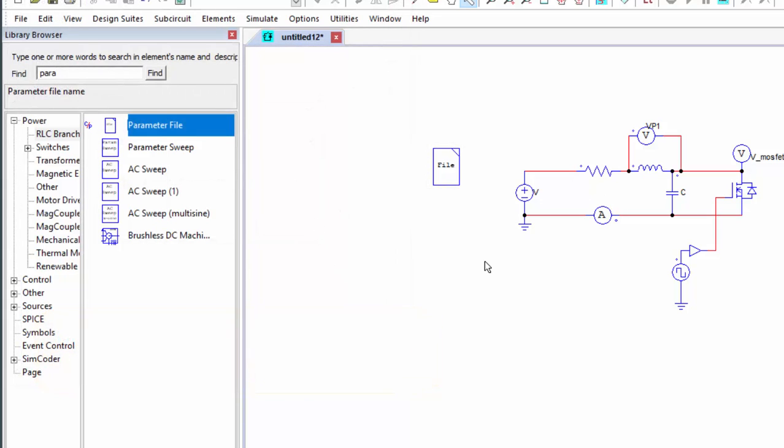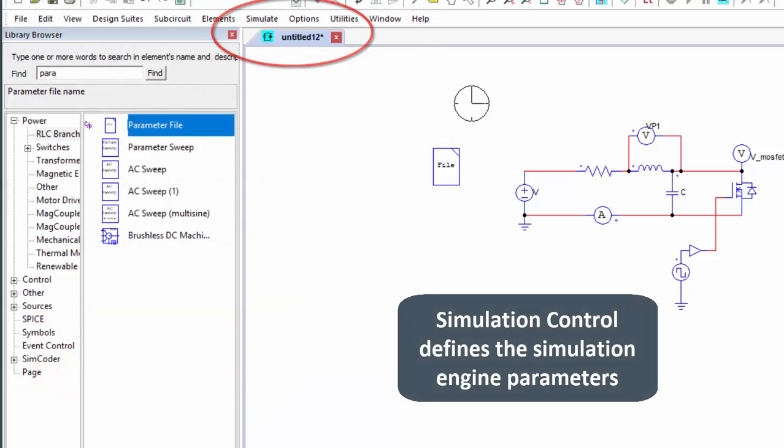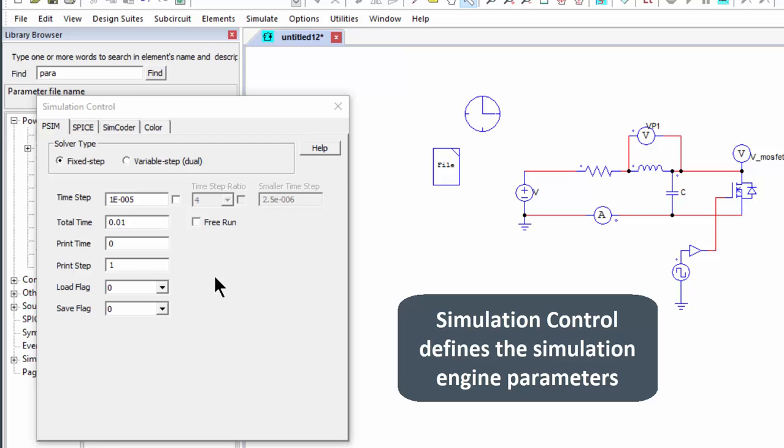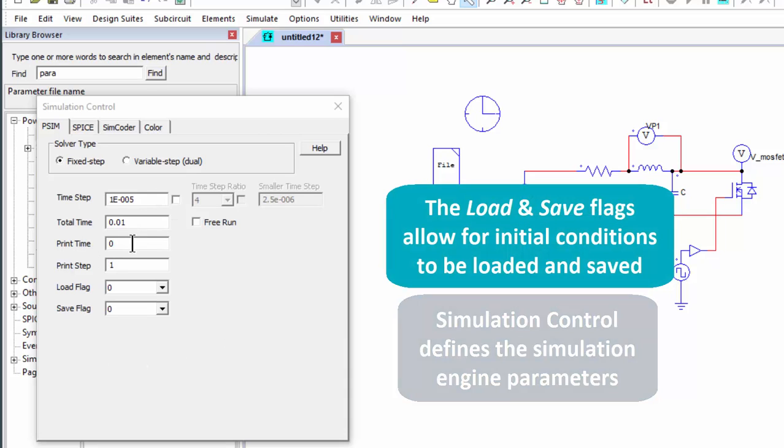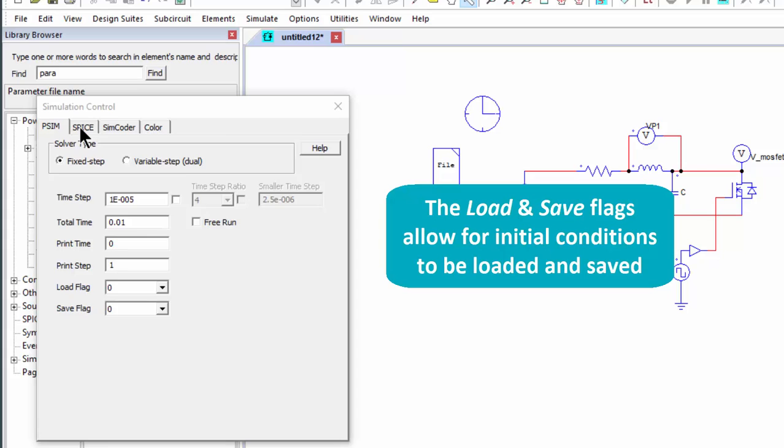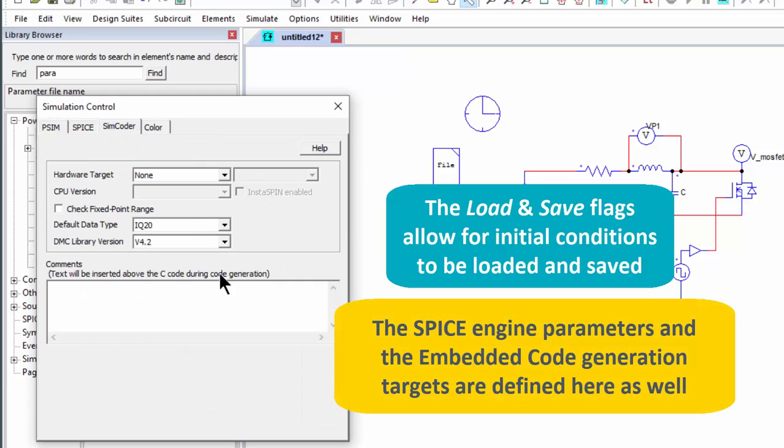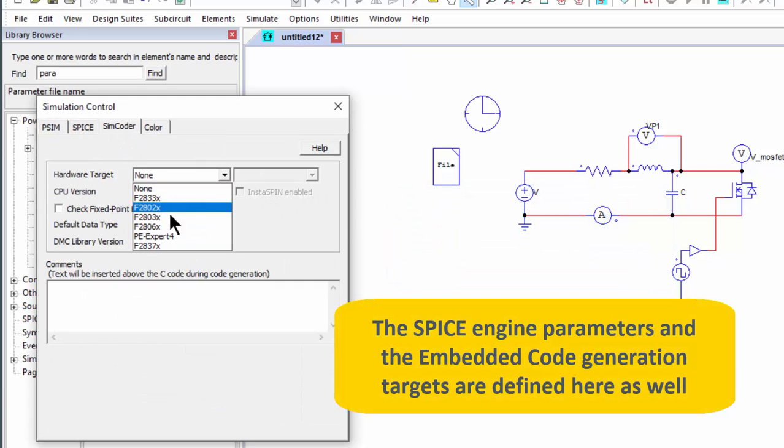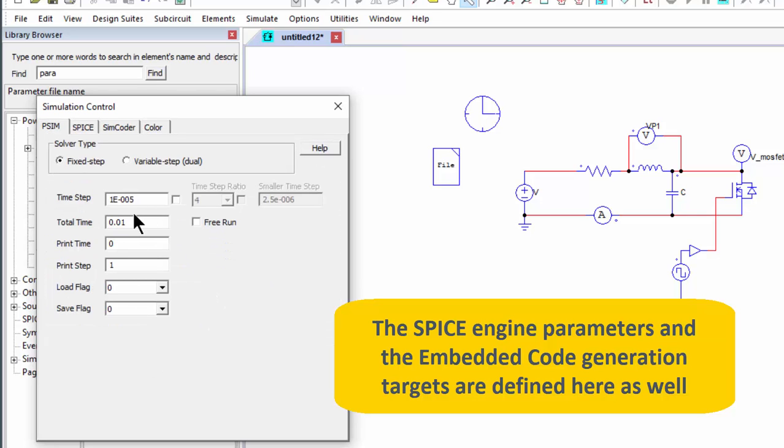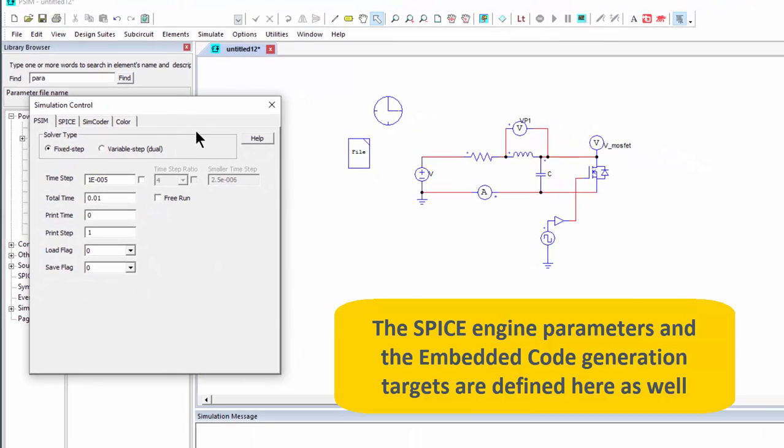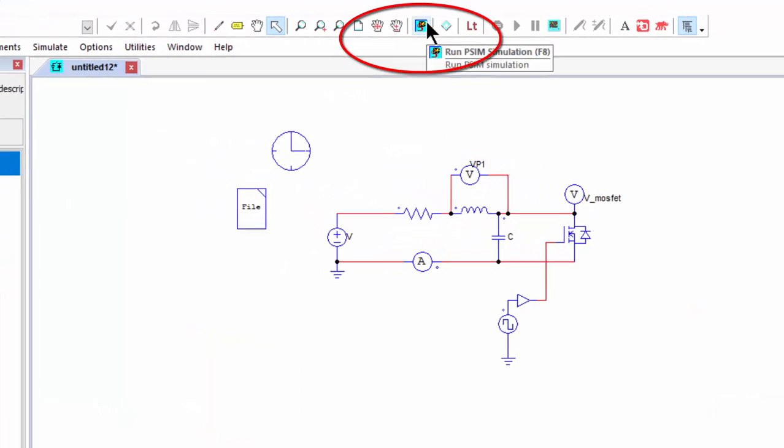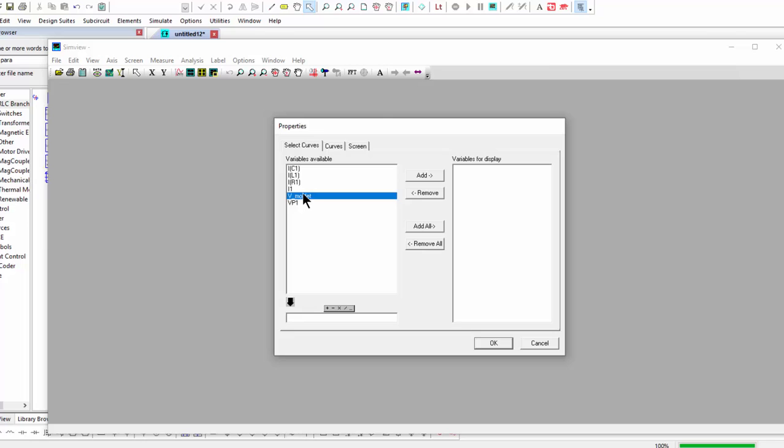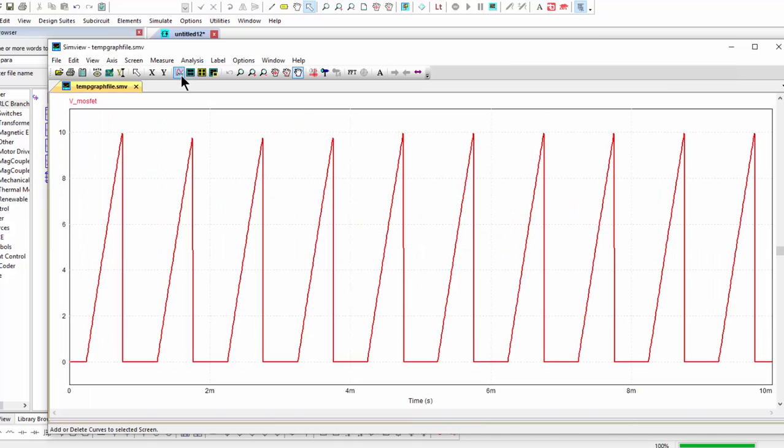So we're essentially ready to simulate, we're missing one element, which is the simulation control block, and we can come in here and then change the time step and the total time. The other parameters here are slightly more advanced, so the spice menu, the simcoder menu for code generation. But let's just run with this. Now we're ready to just go ahead and run that simulation, so we can click that button, and there's the voltage across the MOSFET.